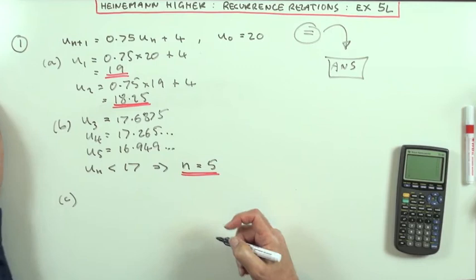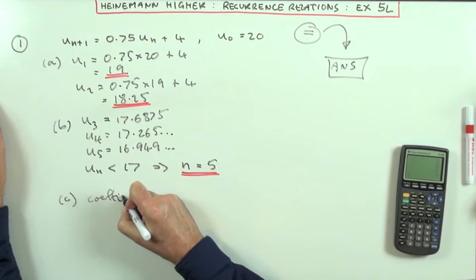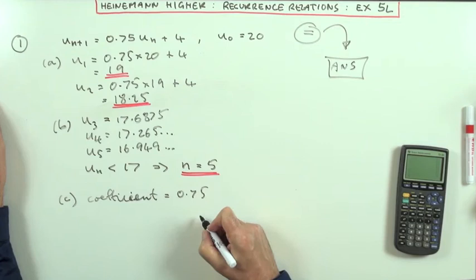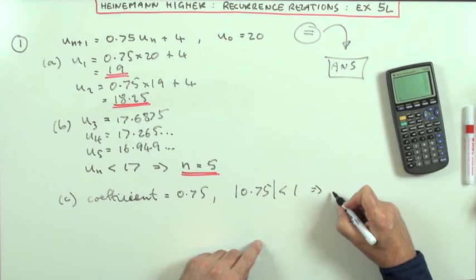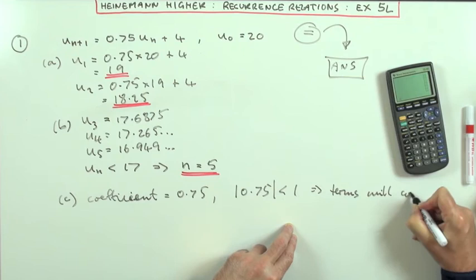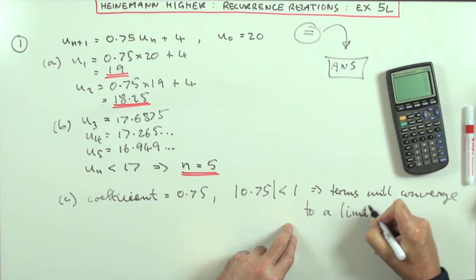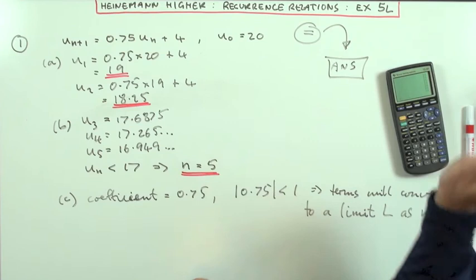But of course I'm not going to specify it that way by putting them all down. Since I'm multiplying by a proper fraction, the coefficient is 0.75. And since 0.75, its absolute value is less than 1, well, you can say it's between 1 and negative 1, that means that the terms will converge to a limit, we'll call that L, as n tends to infinity.